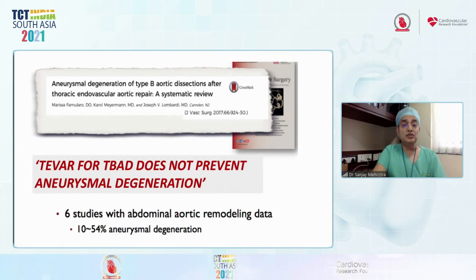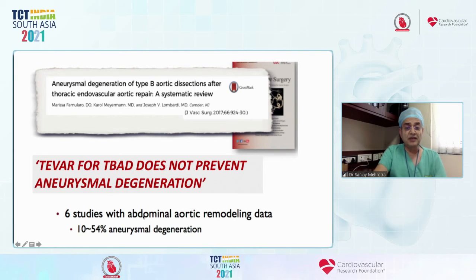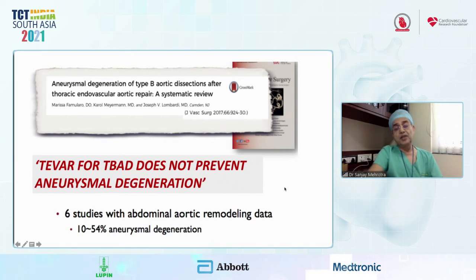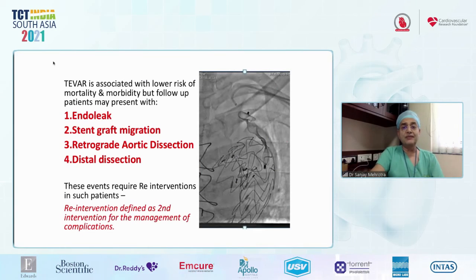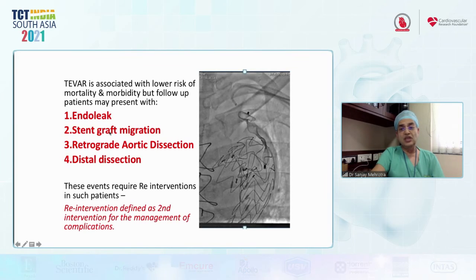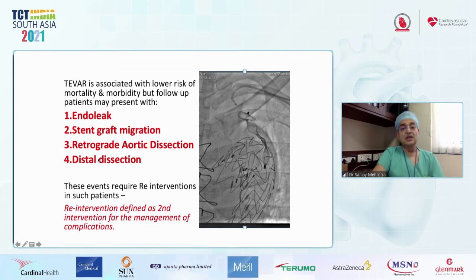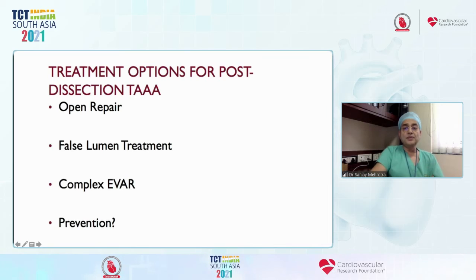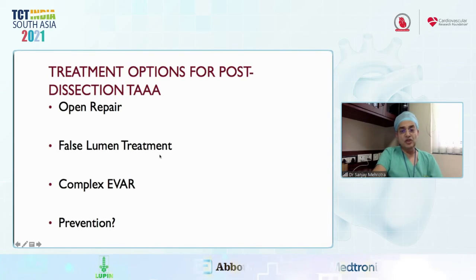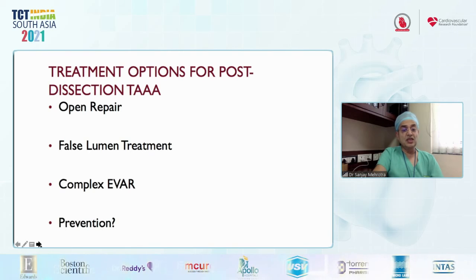TEVAR for type B aortic dissection does not always prevent aneurysmal degeneration. Evidence from six studies shows 10 to 54 percent of patients develop false lumen pressurization and enlargement. Causes of false lumen enlargement include endoleak — the most common — stent graft migration, retrograde aortic dissection, and distal expansion of dissection. Re-intervention options include open repair, false lumen treatment with candy plug, and complex EVAR.